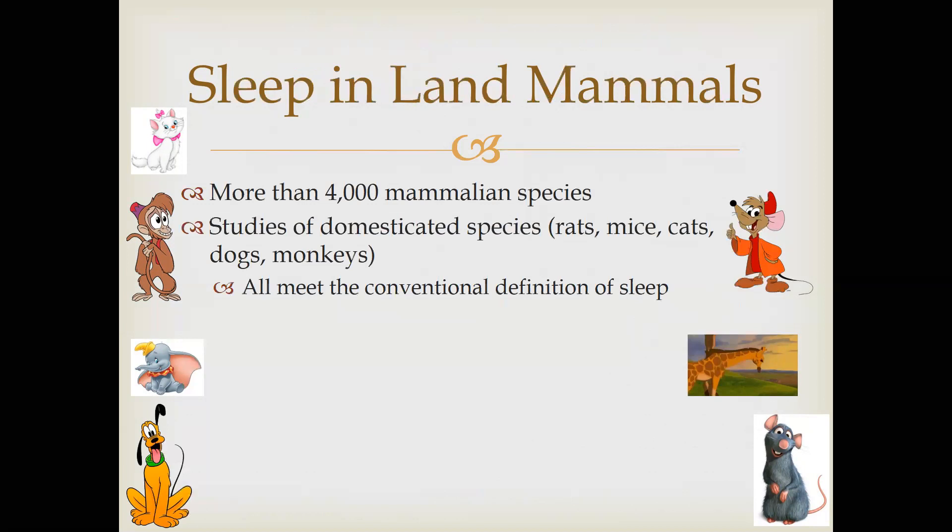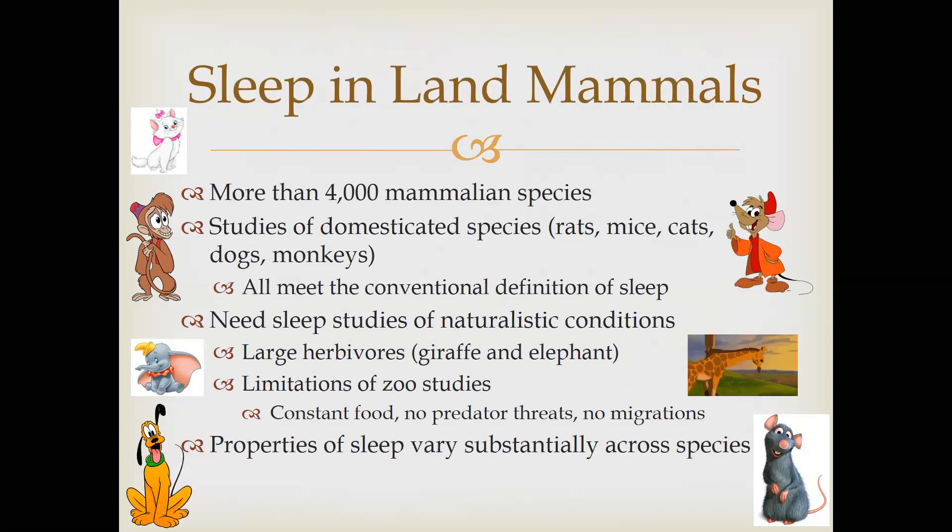We've studied land mammals, but the problem is we've studied them in zoo settings, not in their natural conditions. We don't know what happens to their sleep when animals migrate, because in zoos they have constant food, no predators, and no need to migrate — and this changes the way they sleep. The question is how they sleep in natural settings and how that differs from the zoo studies. All of the domesticated species — rats, mice, cats, dogs, monkeys — meet the conventional definition of sleep, and it looks similar to humans.